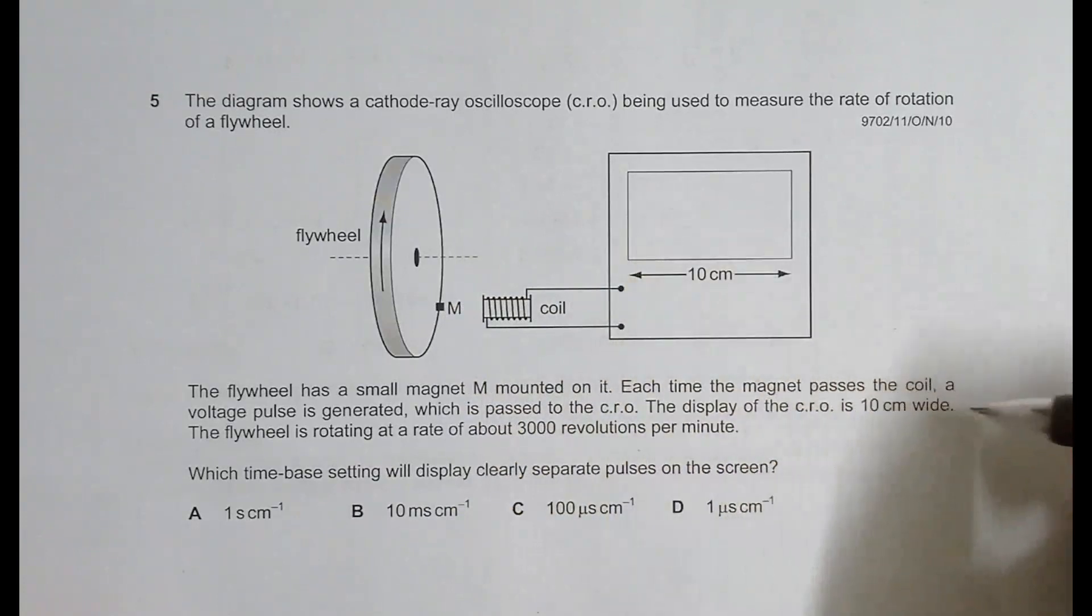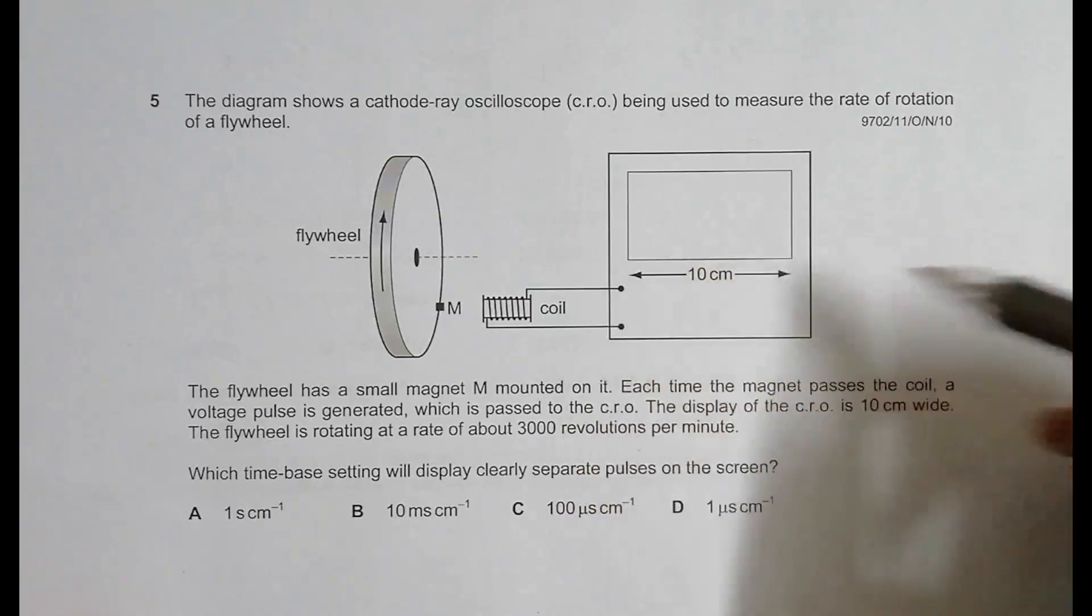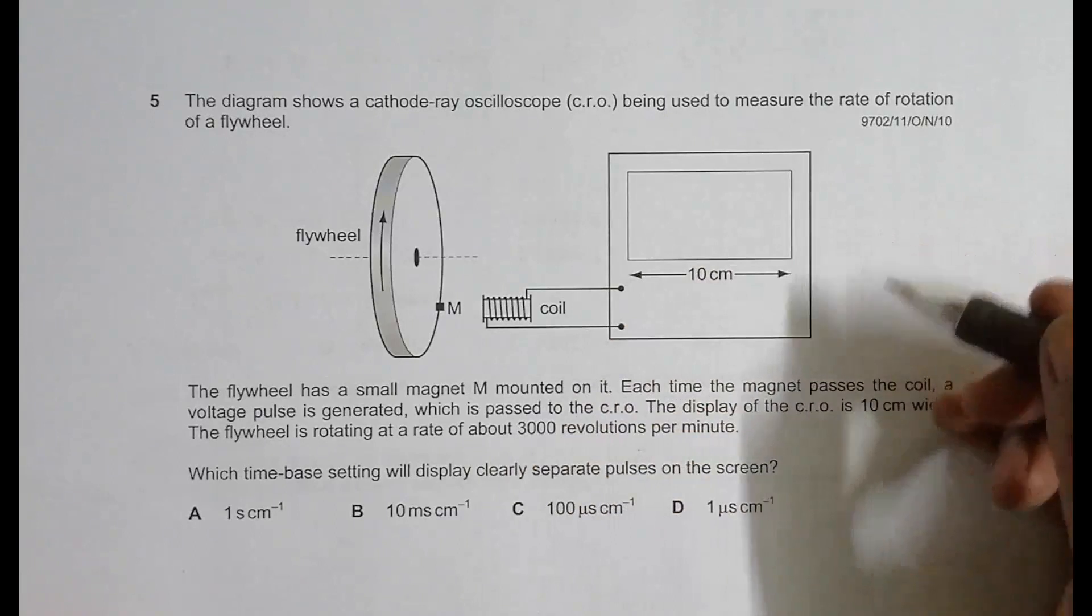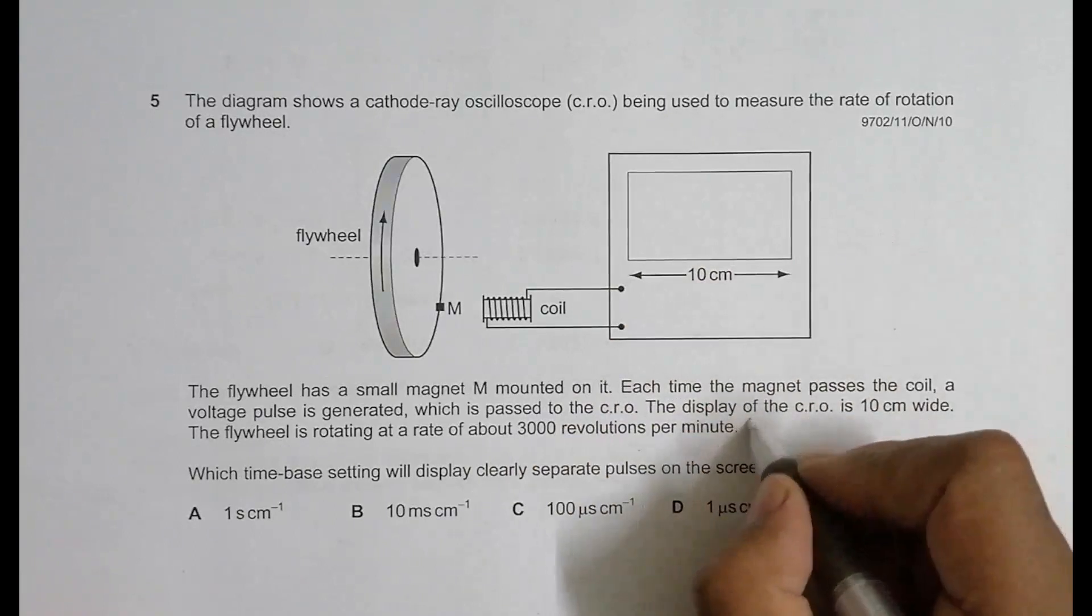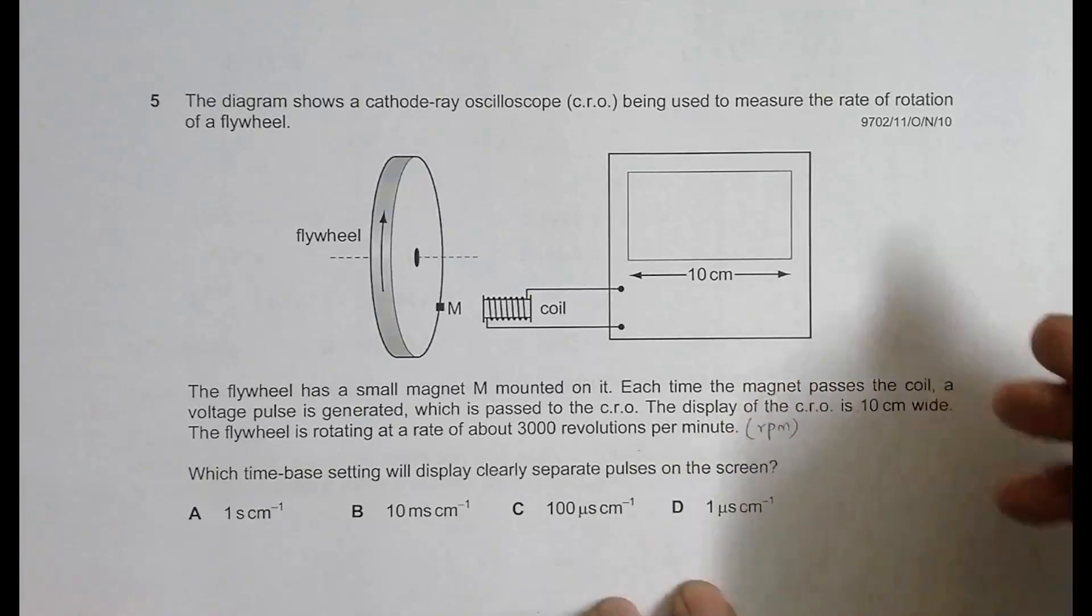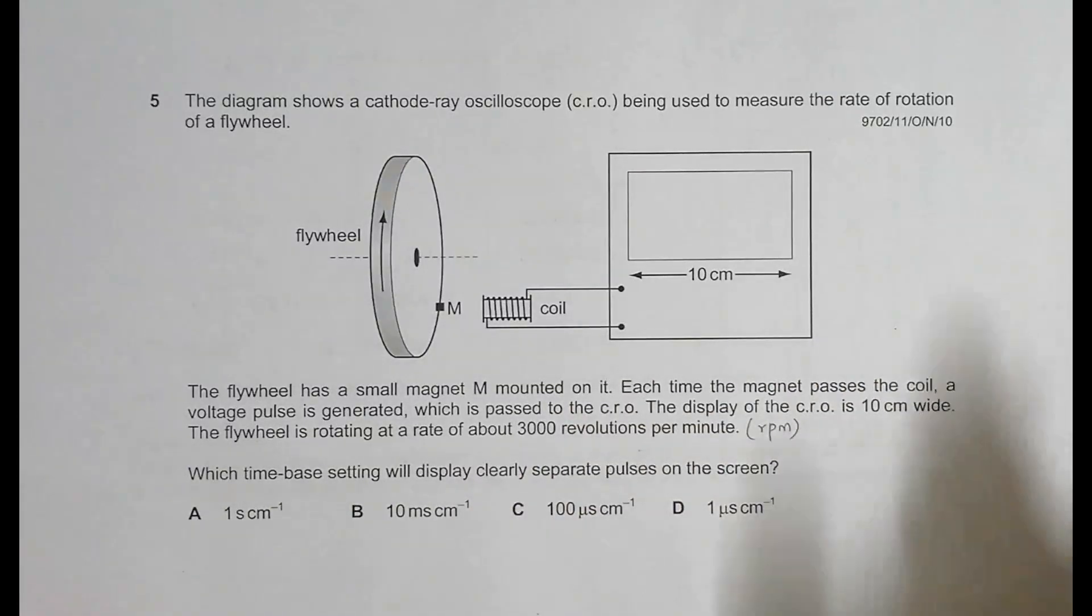The display of the CRO is 10 centimeters wide. The flywheel is rotating at a rate of 3000 revolutions per minute. Which time base setting will display clearly separate pulses on the screen? We have to select an appropriate time base to show separate pulses. First, let's find the frequency and time period.